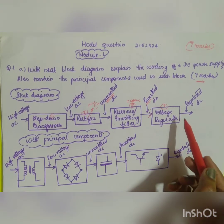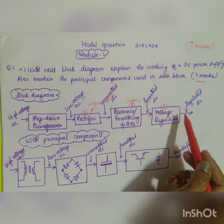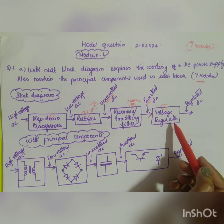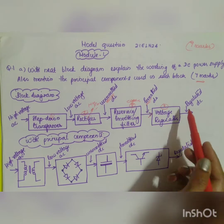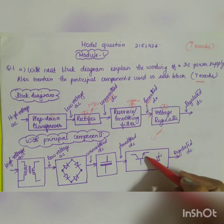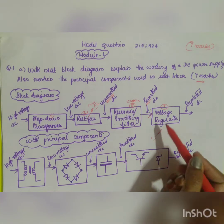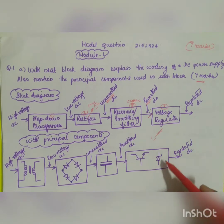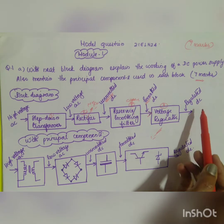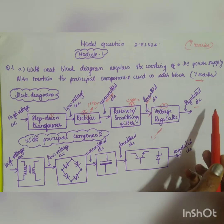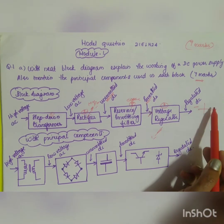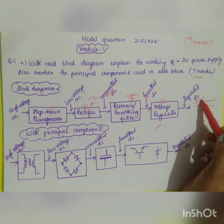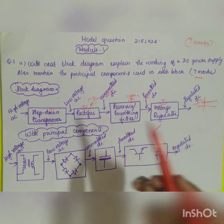Adding a capacitor gives us a smooth DC signal. This DC signal then has to be maintained at a corresponding voltage, so we go for a voltage regulator. The voltage regulator circuit is composed of a transistor and a Zener diode, and the output will be your regulated DC — for example, if it is 5 volts, it will be maintained at 5 volts.